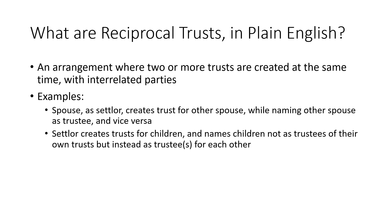Some common examples might be where a spouse, a settlor, creates a trust for the other spouse and names the other spouse as trustee, and vice versa — that other spouse also creates a trust for the first spouse. You might see this in a situation where they're creating spousal lifetime access trusts, or SLATs, or any sort of ILIT or insurance trust created at the same time with simultaneously purchased policies.